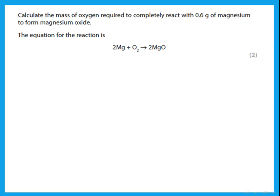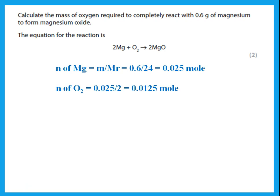Calculate the mass of oxygen required to completely react with 0.6 g of magnesium. Moles of Mg = 0.6 ÷ 24 = 0.025 mol. The equation 2Mg + O₂ → 2MgO shows that moles of O₂ = moles of Mg ÷ 2 = 0.0125 mol. Mass of O₂ = 0.0125 × 32 = 0.4 g.